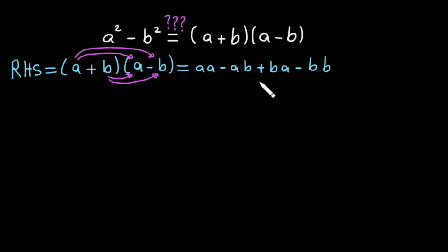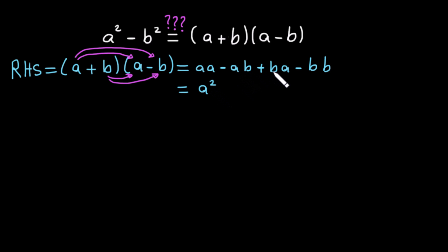Now we have a squared, then minus ab, then plus ba, then minus b squared. Here we can see ab and ba — we can use the commutative law, also called the commutative property of multiplication. The middle terms will cancel.